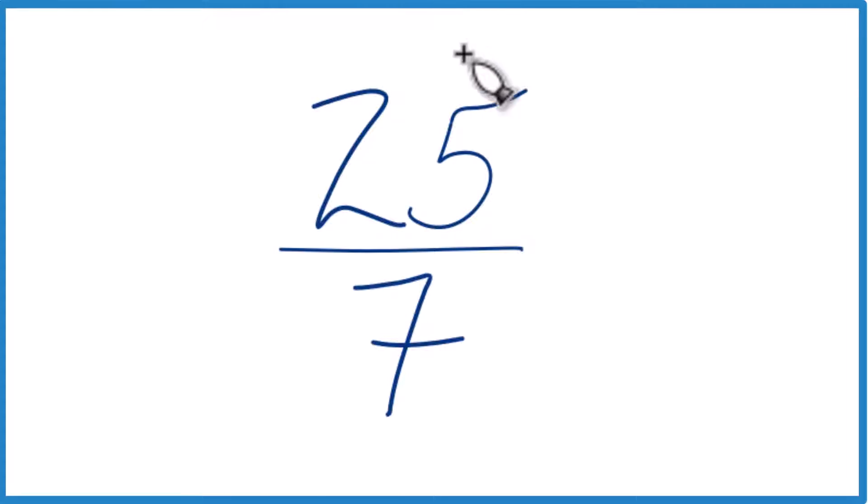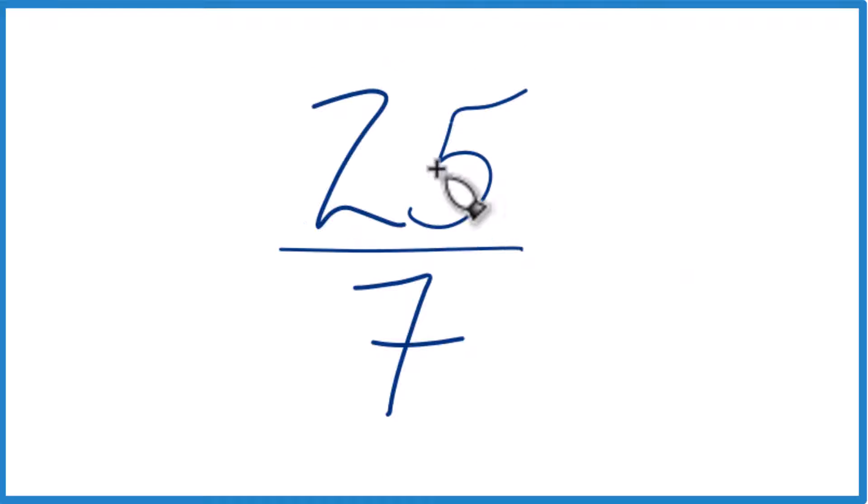I was asked to convert this fraction 25 sevenths from this improper fraction, since we have the numerator larger than the denominator, to a mixed number. So here's how I would do that. I think what I would do is take 7 and see how many times it goes into 25.